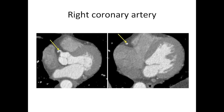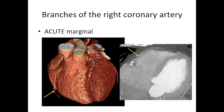Then we've got the right coronary artery. This is where our naming scheme slightly breaks down — it's not really on the right, it's more towards the front, but we still call it the right coronary artery. The right coronary artery runs in the groove between the right atrium and the right ventricle. It normally has a branch that runs along the front side of the right ventricle, called the acute marginal branch — named after the acute margin of the heart.